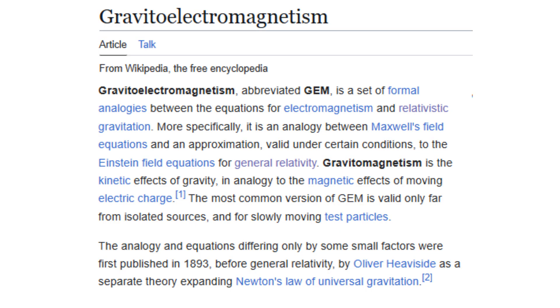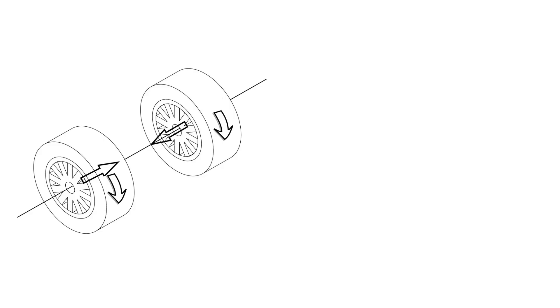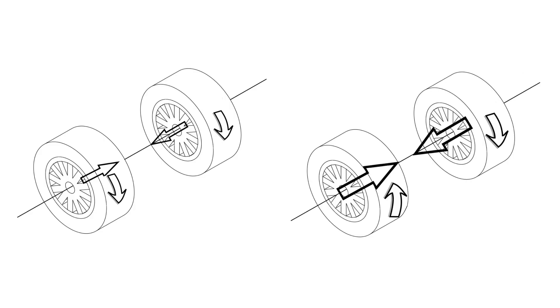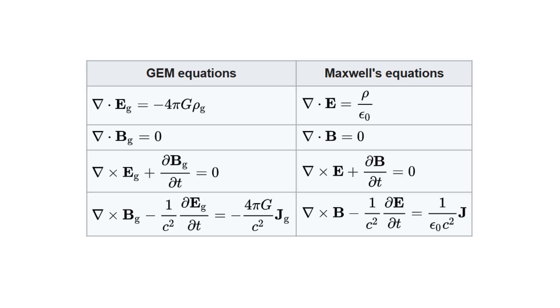Beginning with gravito-electromagnetism, also known as linearized gravity, if two wheels spin on a common axis, their mutual gravitational attraction will be greater if they spin in opposite directions than in the same direction. In gravito-electromagnetism,